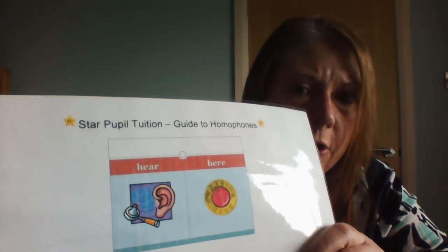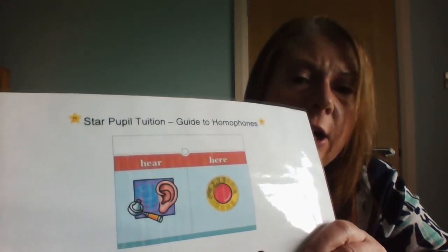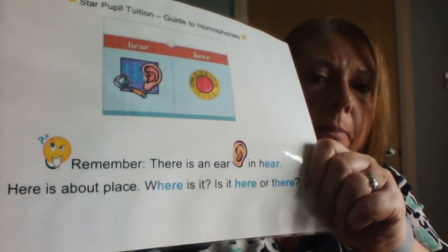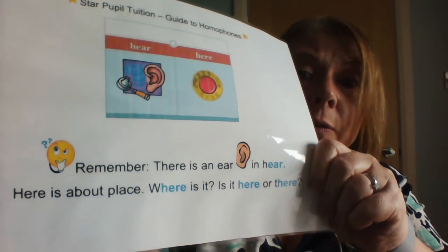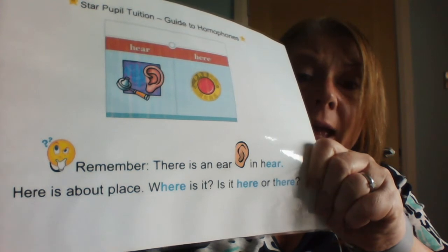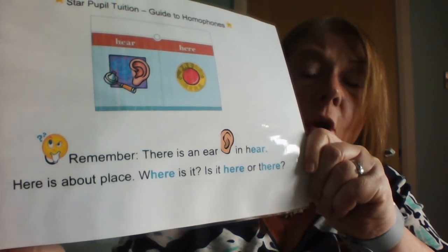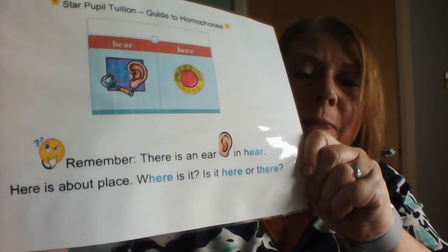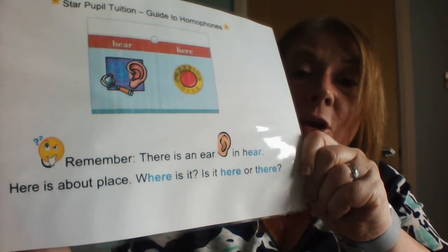The next pair is HEAR and HERE. H-E-A-R is 'can you hear the birds sing?' — there's an EAR in that word, and we use our ears to hear. H-E-R-E is about place — 'who's been here before?' Think of 'where is it — is it here or there?' That should help you remember the difference between the two.